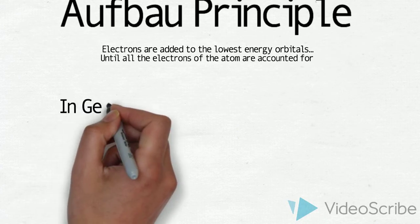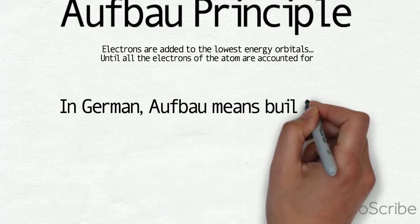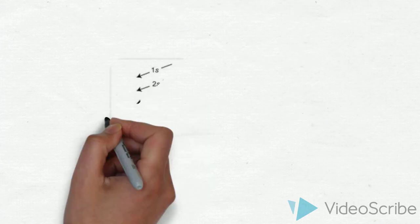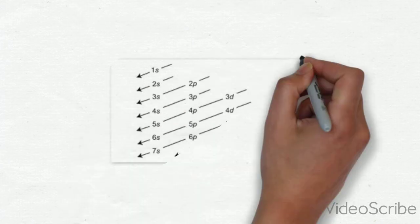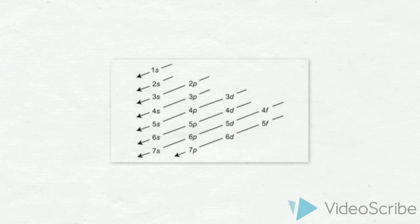Aufbau is German for building up. This image represents that electrons must be placed starting at the lowest energy level and working its way up to the highest.